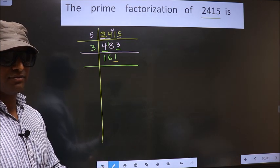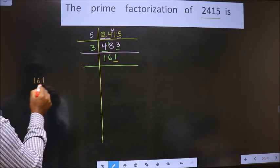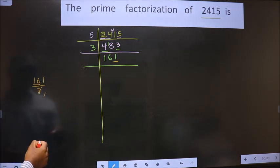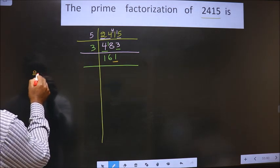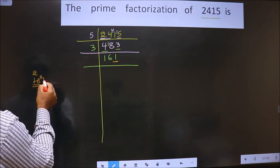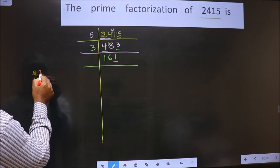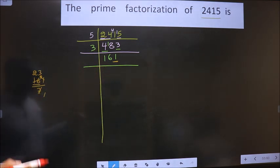Let us check divisibility for 7. That is 161 by 7. Here we have 16. A number close to 16 in the 7 table is 7 times 2 is 14. 16 minus 14 is 2, 2 carried forward making it 21. When do we get 21 in the 7 table? 7 times 3 is 21. So this number is divisible by 7.